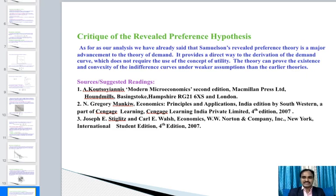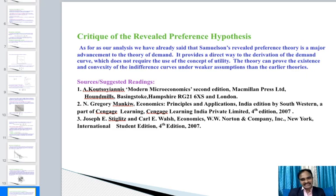In conclusion, both the indifference curve theory and revealed preference theory express how the consumer achieves maximum satisfaction by choosing among different bundles of goods. Suggested readings include works by Koutsoyiannis, N.G. Mankiw, Joseph Stiglitz, and K.S.N.V.